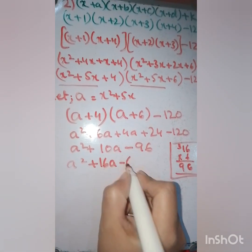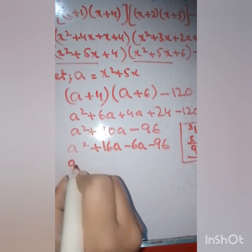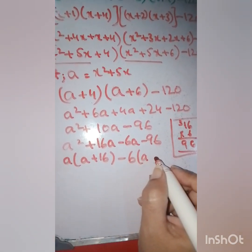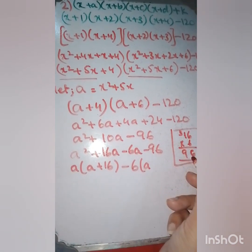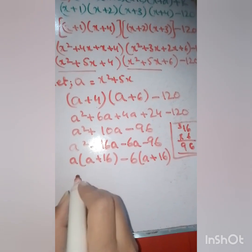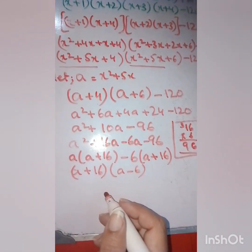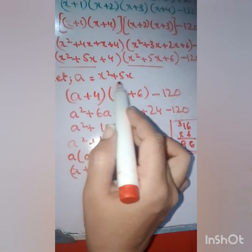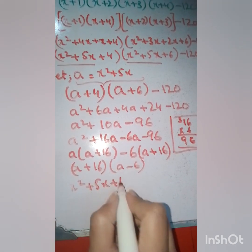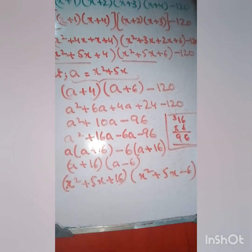Applying the middle term, I write a² + 16a minus 6a minus 96, giving a(a + 16) minus 6(a + 16), so (a + 16)(a minus 6). Substituting back where a = x² + 5x, we get (x² + 5x + 16)(x² + 5x minus 6) as our expression.